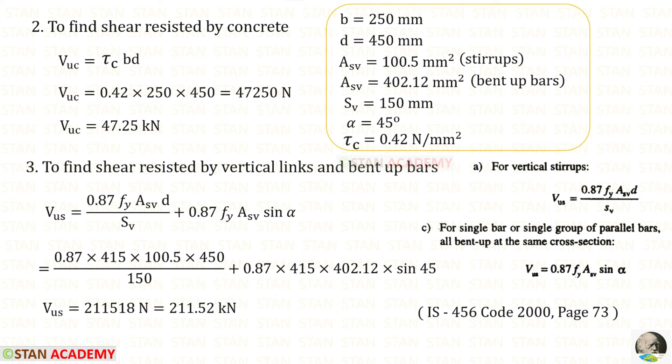In this problem, with the vertical links, we have also bent up bars. In this case, with this formula, we have to also add this formula. This ASV is the area of the stirrups, and this ASV is the area of the bent up bars. For VUS, we will get 211.52 kN.